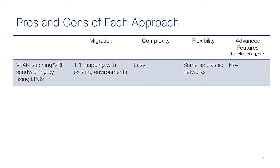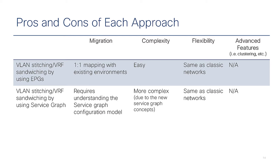So what are the pros and cons of each mode? VLAN stitching or VRF sandwiching using EPGs is the easiest way to migrate from an existing network and offers the same flexibility as classic networks. Using VLAN stitching or VRF sandwiching with service graph doesn't add a lot of value over manual VLAN stitching or EPG mode — it requires understanding the service graph model, so it's slightly more complex.